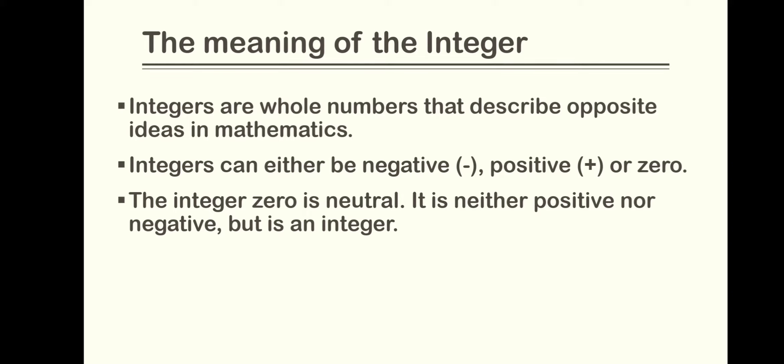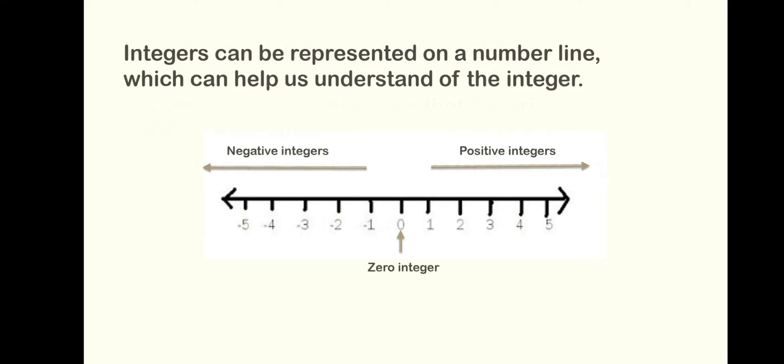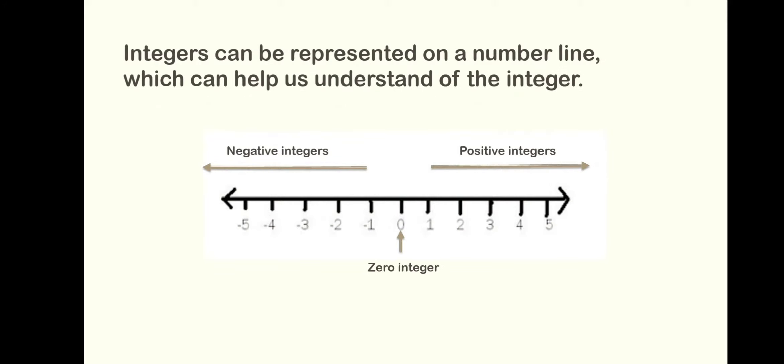The integer zero is neutral. It is neither positive nor negative, but is an integer. Integers can be represented on a number line, which can help us understand the integer.